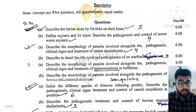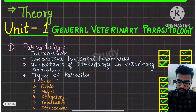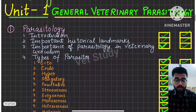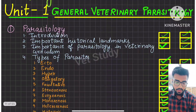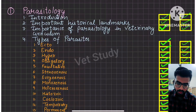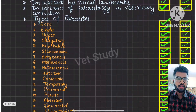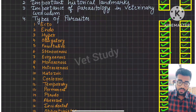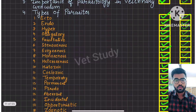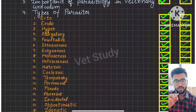Now we will discuss according to the syllabus. The first thing in our theory is General Veterinary Parasitology, Unit 1. There are not many questions from introduction, historical landmarks, and importance of parasitology. Next, types of parasites — this is a very important topic. Maximum 1-mark questions will come from here.